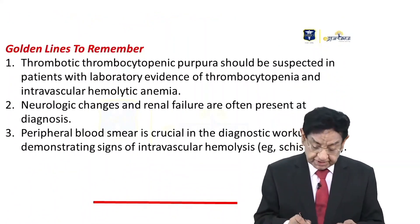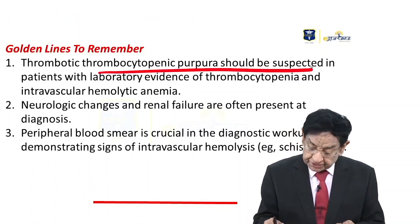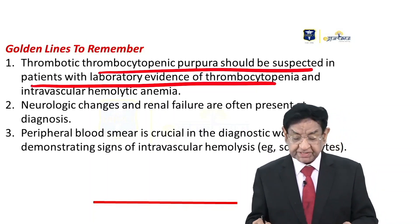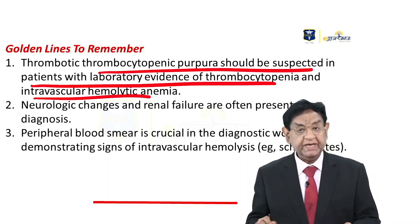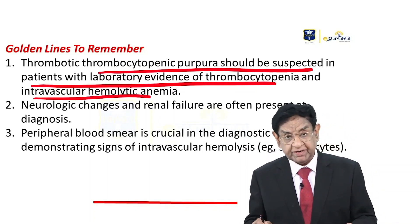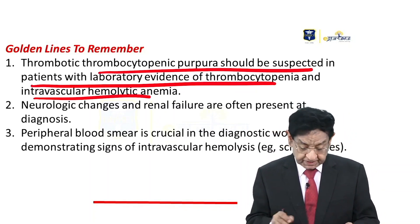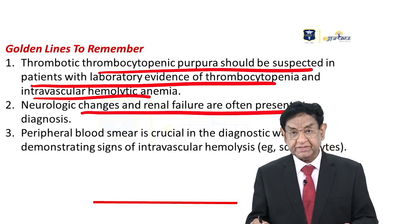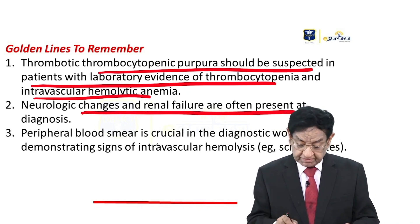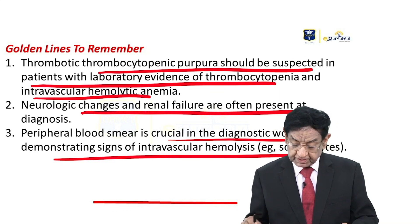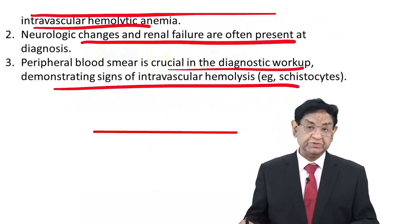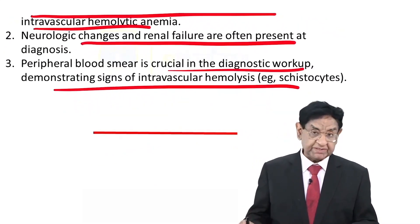Golden line to remember: TTP should be suspected in patients with lab findings of thrombocytopenia and intravascular hemolytic anemia. Neurological features and renal failure are often present. Peripheral blood smear will show evidence of intravascular hemolysis — schistocytes or helmet cells.